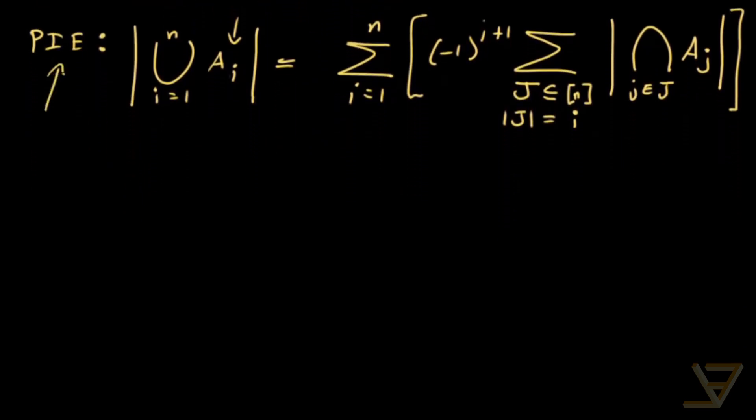So we're going to be needing this formula, the principle of inclusion exclusion. The second thing we're going to be needing is that the total number of functions f from the section r to the section s is s to the power of r. And that's because we have r positions with s choices in the output for each one. So it's s times s times s r times.